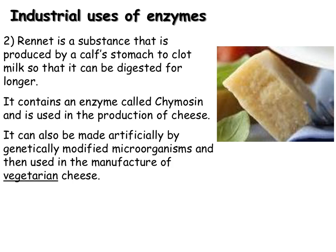We can also use enzymes in food production. One example is the manufacturing of vegetarian cheese. Rennet is a substance produced by a calf's stomach to clot milk, and it contains an enzyme called chymosin which is used in cheese production. We can also make chymosin artificially by genetically modifying microorganisms and growing them in a fermenter to produce our chymosin — this makes vegetarian cheese as we have not used rennet from a calf's stomach. The microorganism usually used is yeast as it is easy to grow in a fermenter.